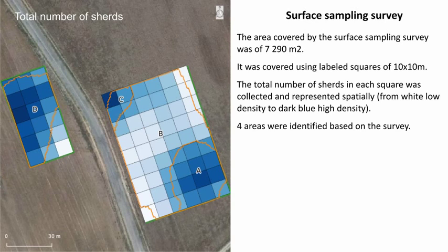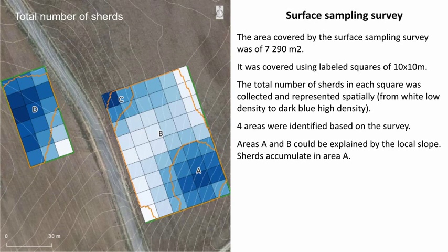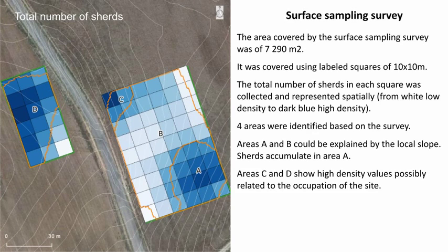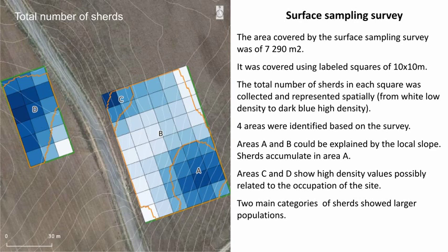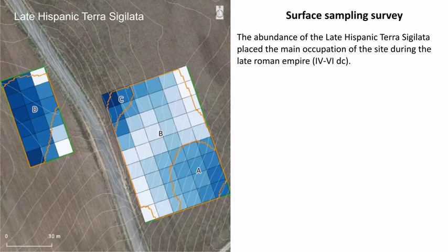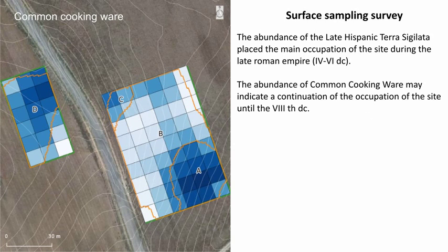Four areas were identified based on the survey. Areas A and B could be explained by the local slope, with sherds accumulating in Area A. Areas C and D show high density values possibly related to the occupation of the site. The abundance of late Hispanic terra sigillata placed the main occupation of the site during the late Roman Empire. The abundance of common cooking ware may indicate the continuation of the occupation of the site until the 8th century.